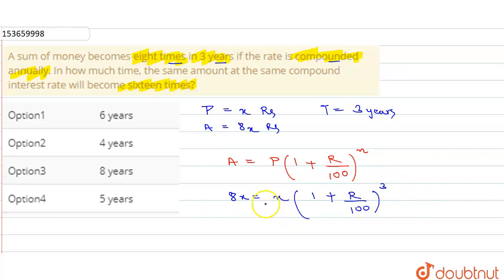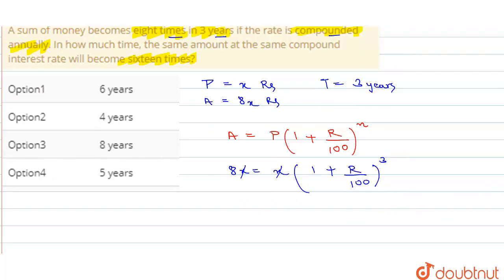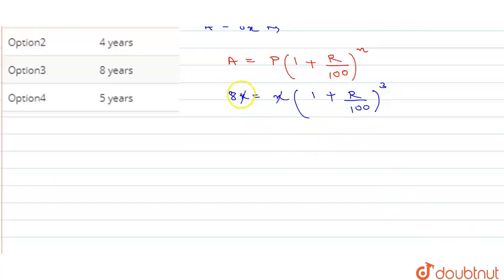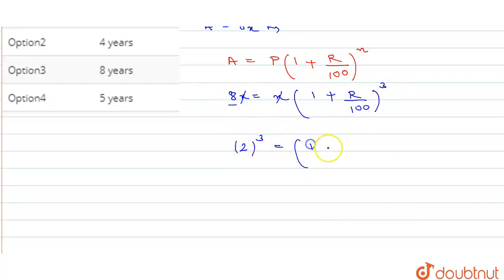Now let's simplify this. The x cancels with x. So what do we get? We can write 8 as 2 to the power 3. So 2 to the power 3 equals (1 + rate of interest / 100) cubed.